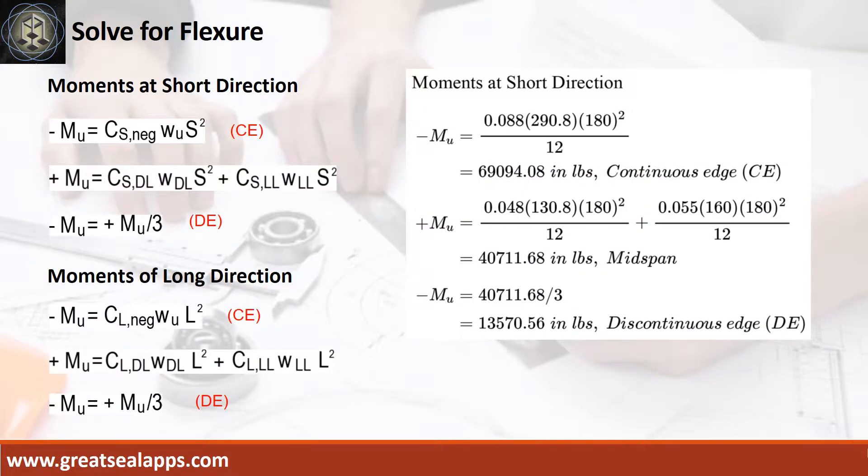Moments at short direction: negative moment at continuous edge is 69,094.08 inch-pounds; positive moment at mid-span is 40,711.68 inch-pounds; negative moment at discontinuous edge is 13,570.56 inch-pounds.